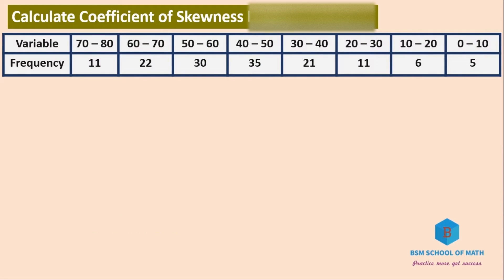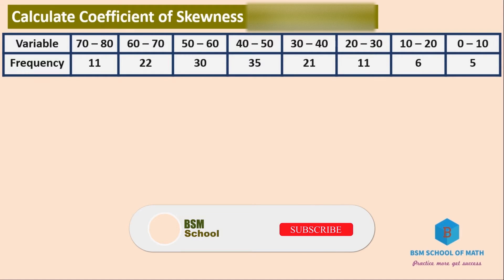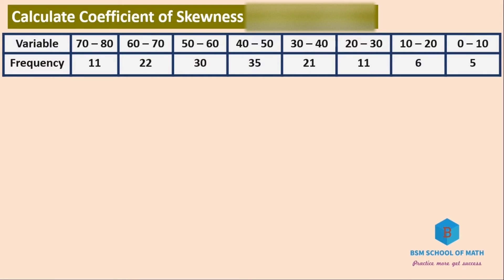The class intervals are given in descending order: 70 to 80, 60 to 70, 50 to 60, 40 to 50, 30 to 40, 20 to 30, 10 to 20, and 0 to 10. We rearrange them in ascending order: 0 to 10, 10 to 20, and so on.